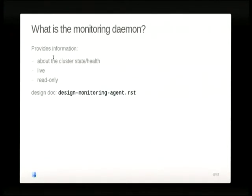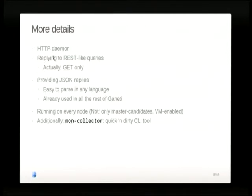It gives you information about the health and the state of the cluster. The state is general things that are happening, whether or not they're bad, and the health is: are things okay or not. It gives you very live, up-to-date information, and exclusively read-only information — you can't do anything on it. There's a design document which you can read about what you were thinking when you were implementing it. It's an HTTP daemon with only GET queries, and it gives you replies in JSON. It runs on every node, because you want to control what's going on in real time.